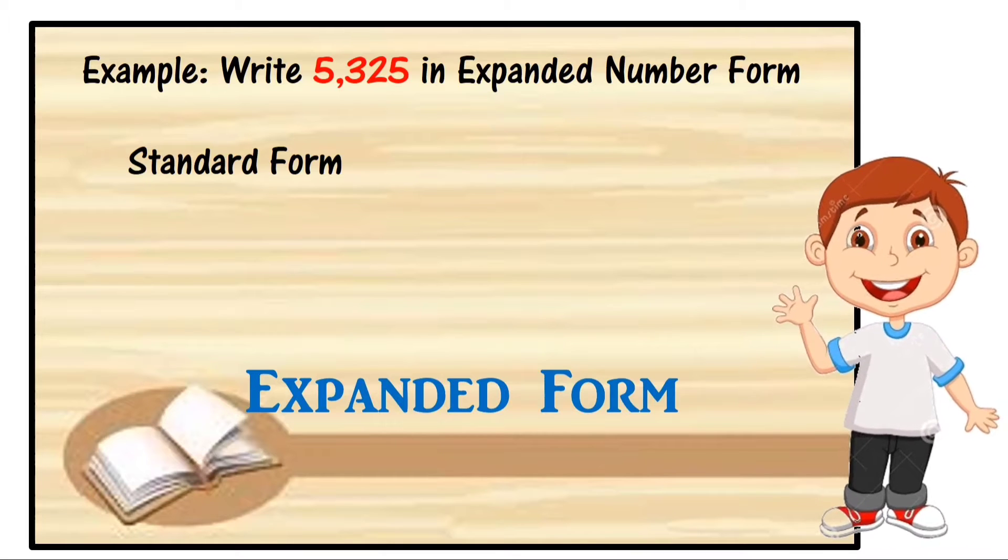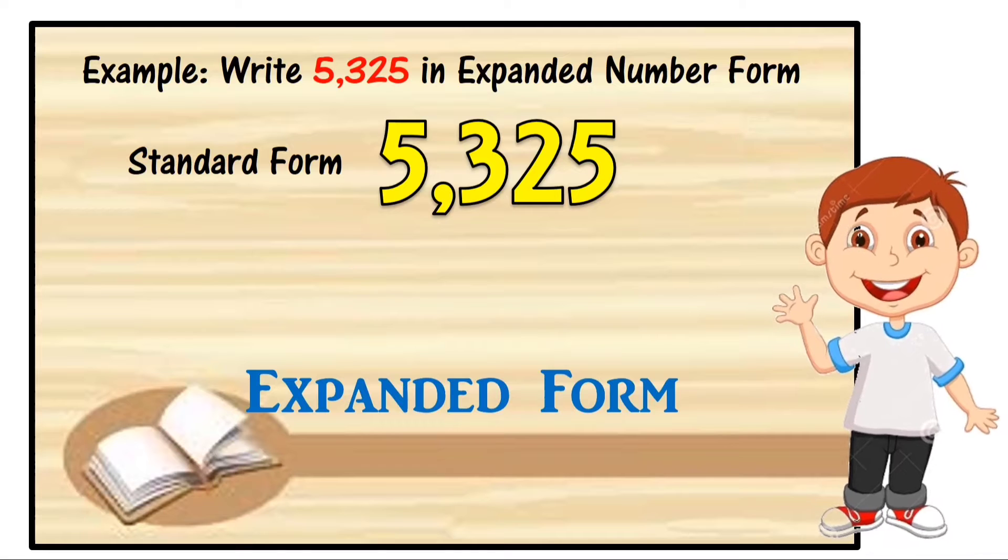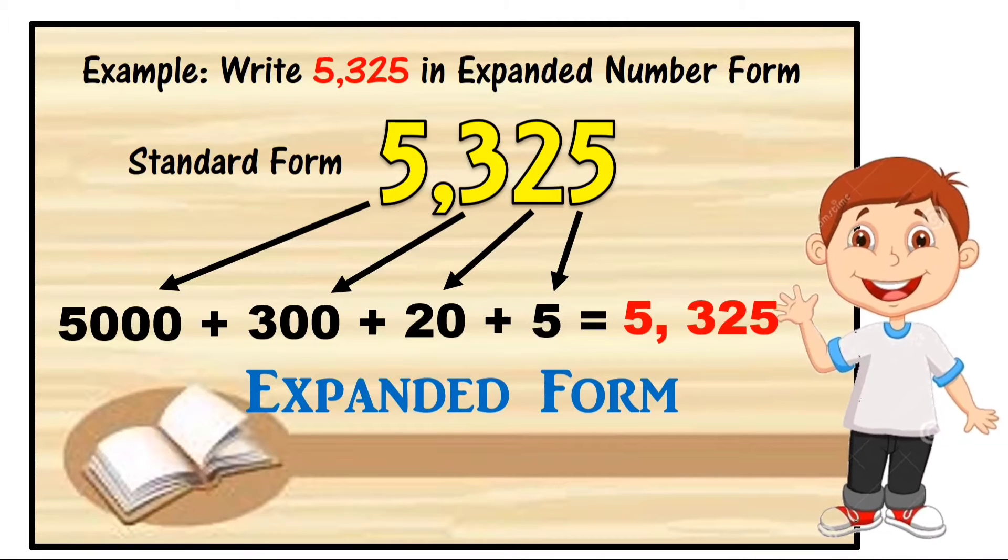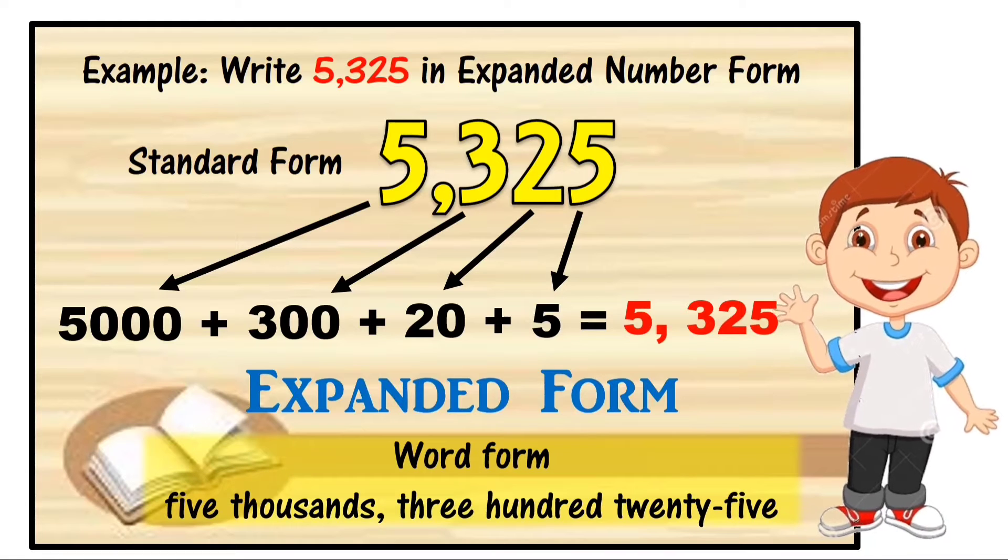Example: Write 5,325 in expanded number form. 5,325 is the standard form. It can be expressed as 5,000 plus 300 plus 20 plus 5 equals 5,325. 5,325 is read as five thousand, three hundred twenty-five.